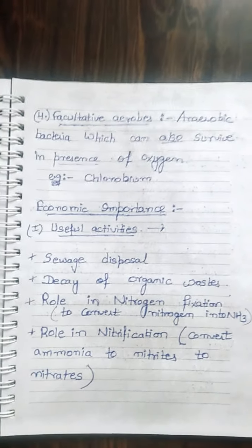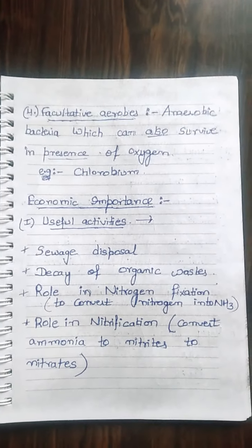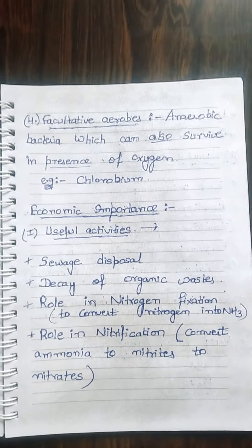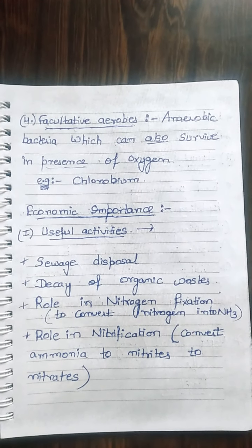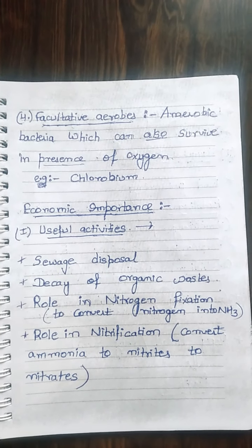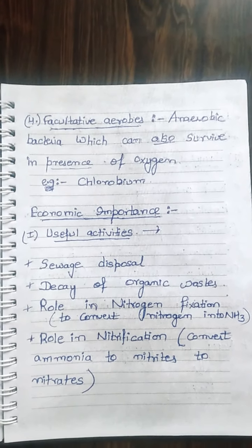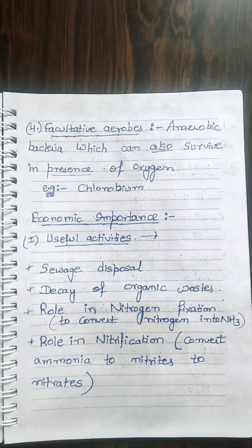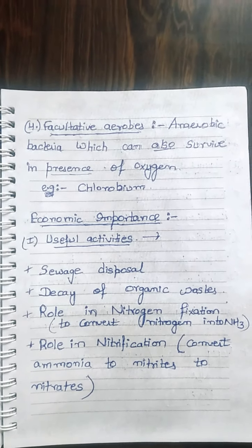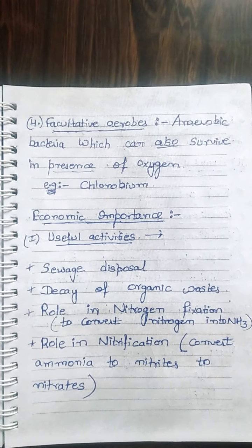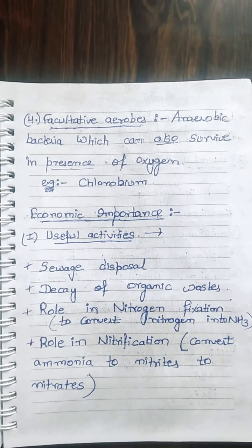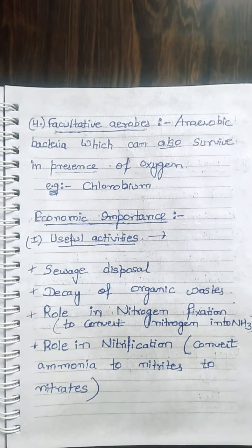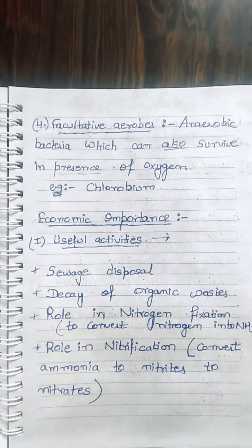Next are facultative aerobes — anaerobic bacteria which can also survive in the presence of oxygen. An example is Chlorobium, which can also survive in the presence of oxygen.